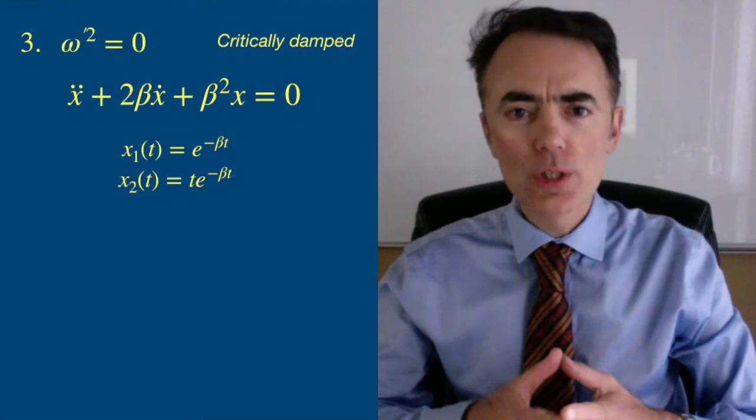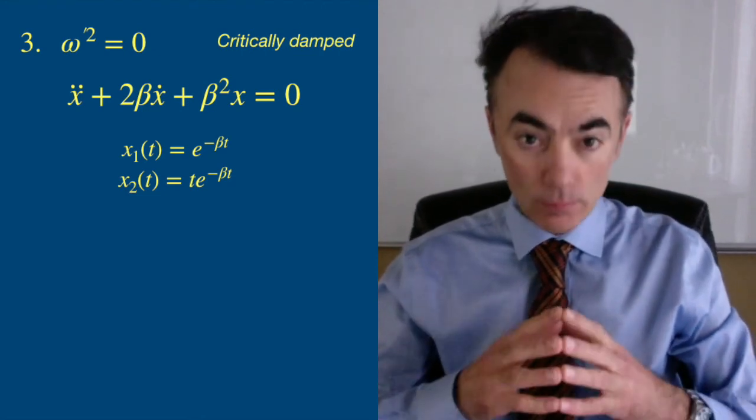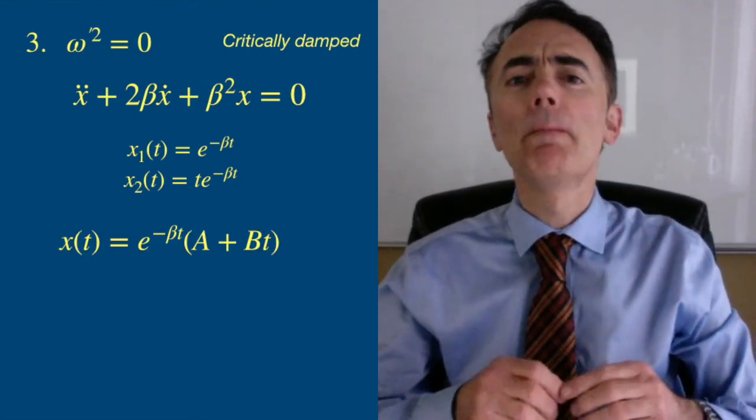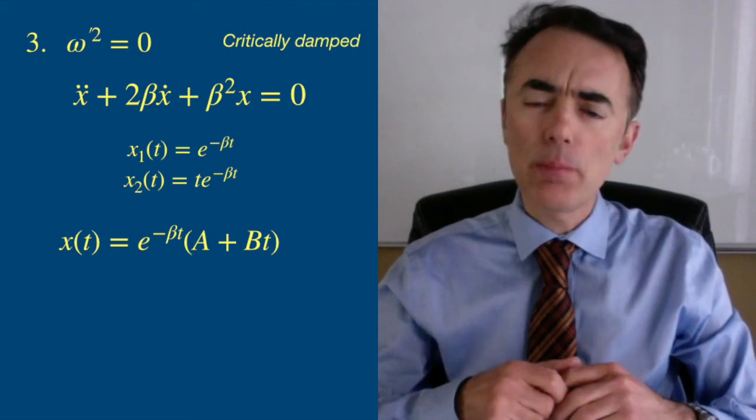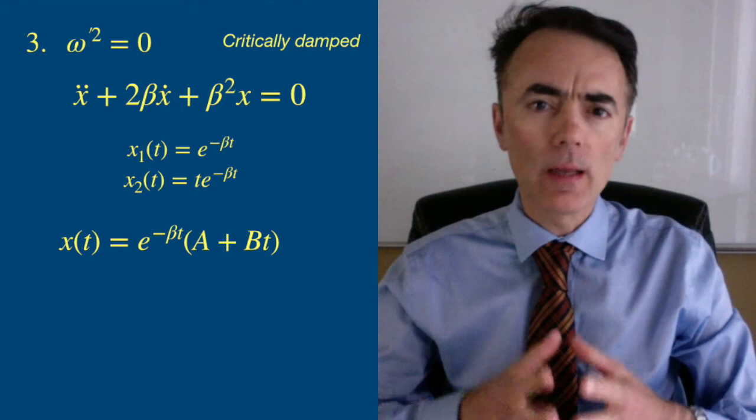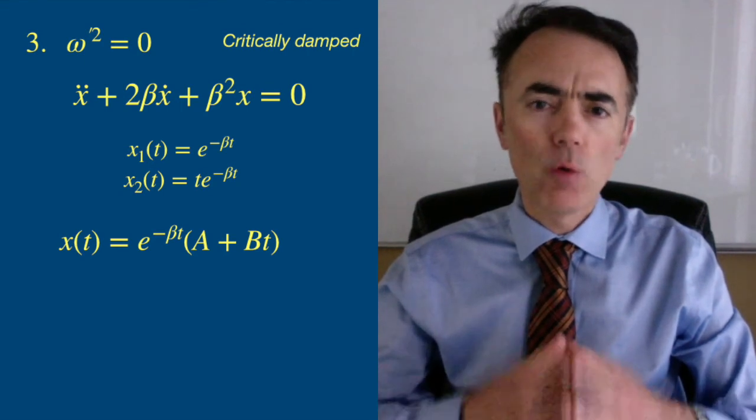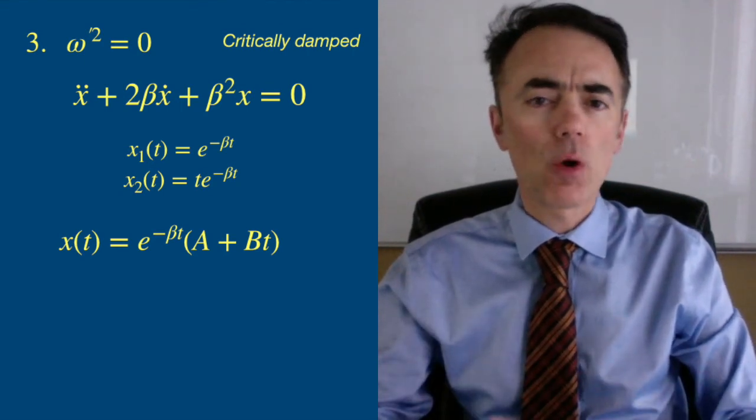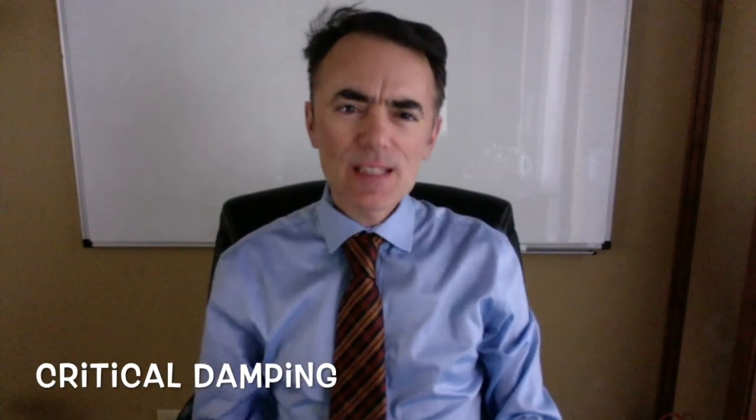So the most general solution is x of t equal to e to the minus beta t times a plus bt. Here the exponential term will win the linear term and overall will go to zero for large t. This is called critical damping. This is the case when the system goes to zero the quickest. So if you want to design a system that does this quickly, you need to tune it so that beta is equal to omega naught.